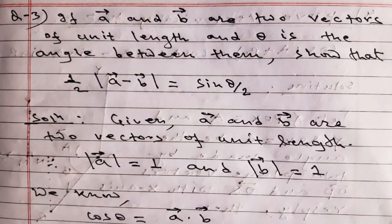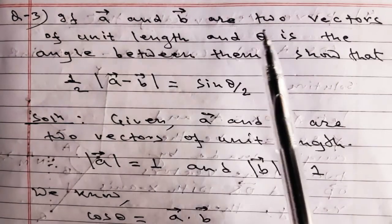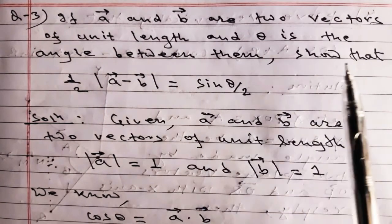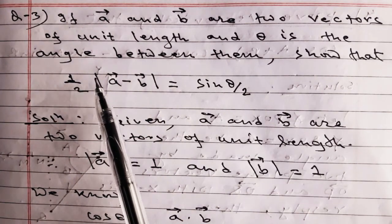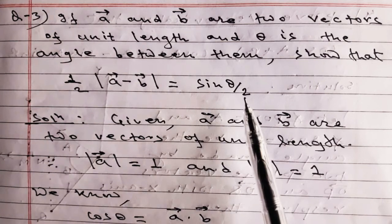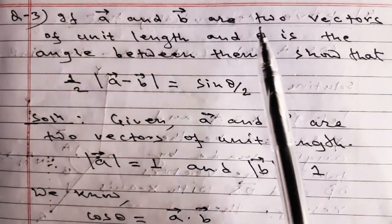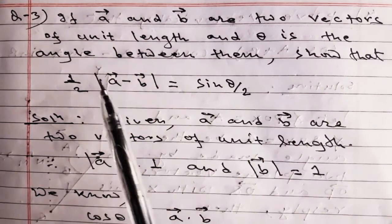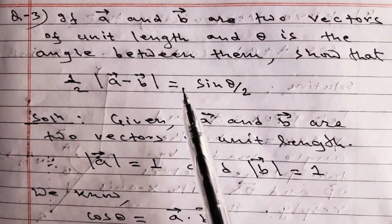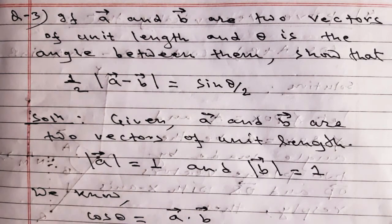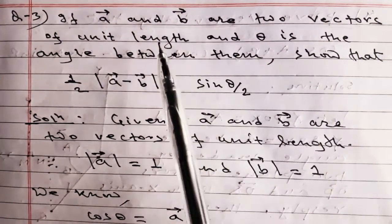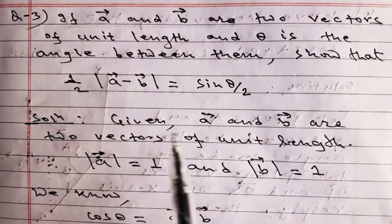Question number three: if vector A and vector B are two vectors of unit length and theta is the angle between them, show that (1/2)|A - B| = sin(θ/2). Since A and B are unit vectors, |A| = 1 and |B| = 1.